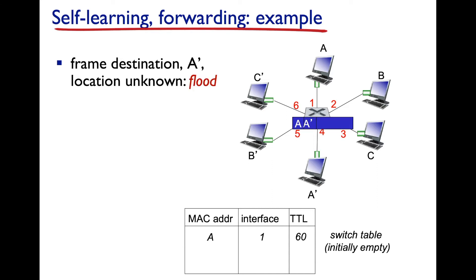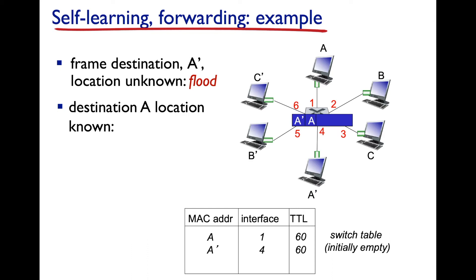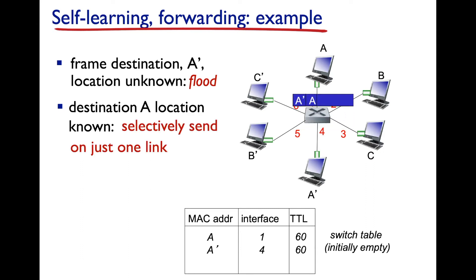A copy of this frame goes to every host on the switch except A. All of them except A prime see the destination MAC address is not theirs. A prime sees it is its MAC address, picks up the frame, pulls it into memory, and unwraps the datagram. It sends an ACK in the reverse direction. A prime then sends a frame back; the switch sees source MAC address A prime came in on port 4, writes that entry, looks up destination MAC address A, finds it, and selectively forwards through interface one.